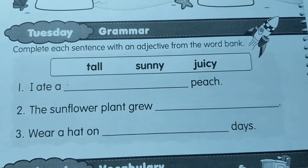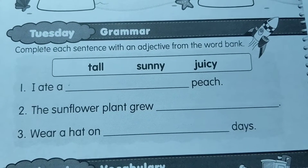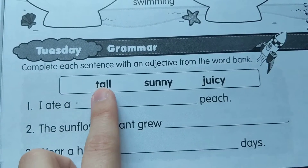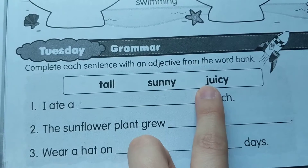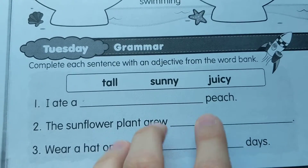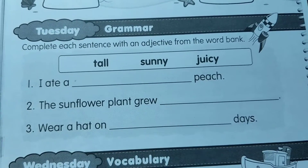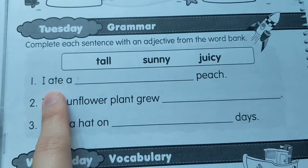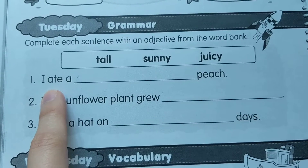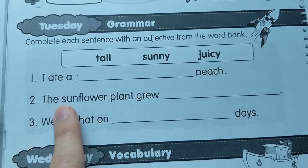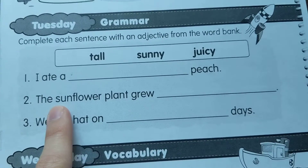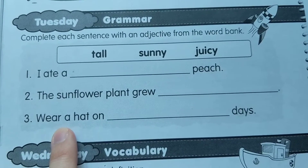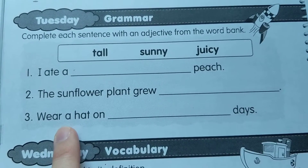For the next section, we're going to complete each sentence with an adjective from the word bank. Your words are tall, sunny, and juicy. We need to put the right word in the right spot. The sentences are: 'I ate a ___ peach.' 'The sunflower plant grew ___.' 'Wear a hat on ___ days.'